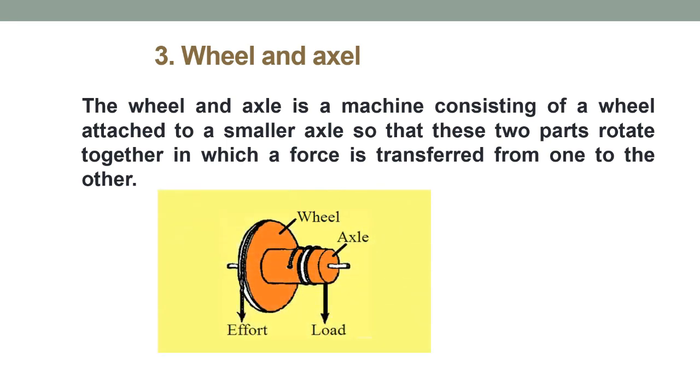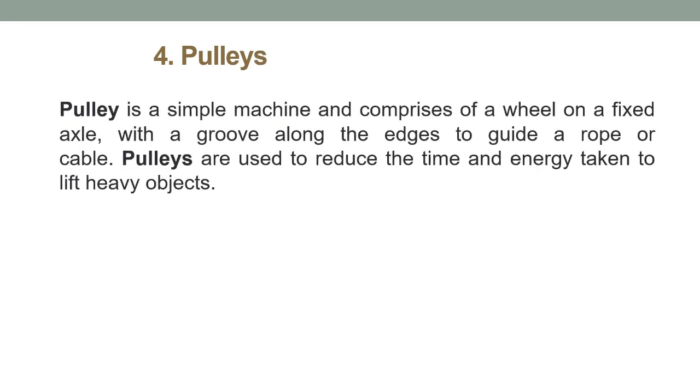The last form of simple machine is pulley. It is also a common simple machine that we are using in our day-to-day activities. Pulley has a wheel on a fixed axle. They are used to reduce the time and energy needed to lift a heavy object upwards. For example, we are using pulley to draw a bucket of water from the well.